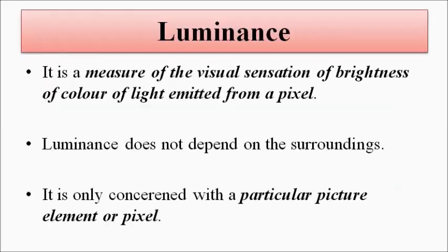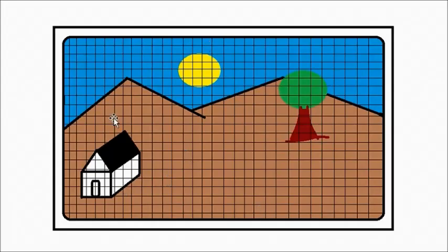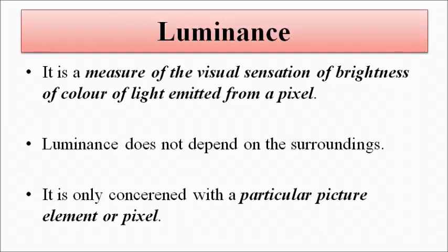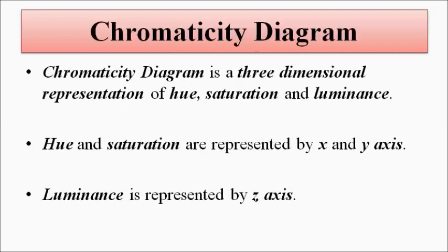Luminance is basically the brightness level of each pixel of an image. Images are divided into small electrical components called pixels, and the brightness of the colored light emitted from each pixel is called luminance.